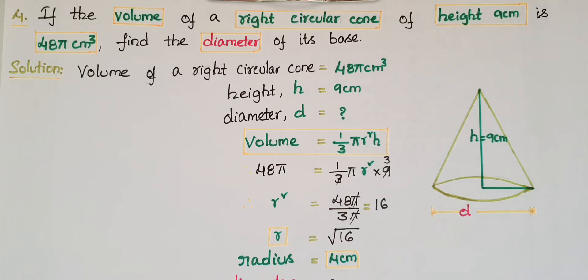Hello everyone, today I am going to solve the fourth problem from Exercise 13.7 on Surface Areas and Volumes from NCERT Class 9. If the volume of a right circular cone of height 9 centimeters is 48π centimeter cube, find the diameter of its base.